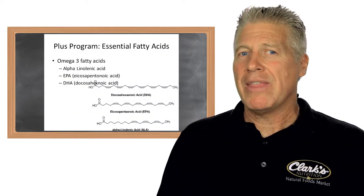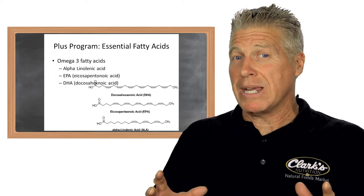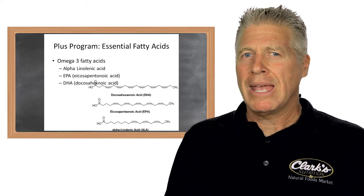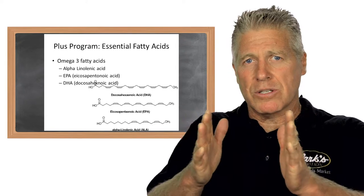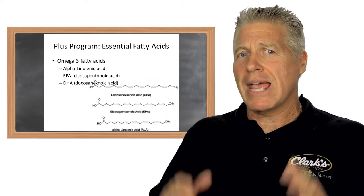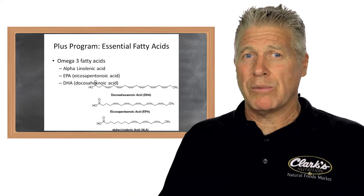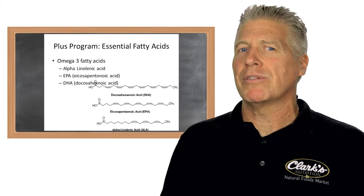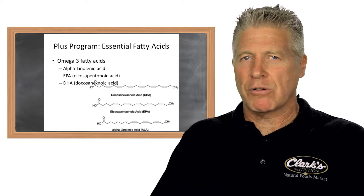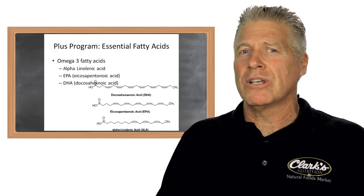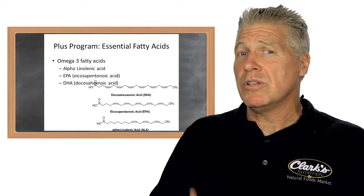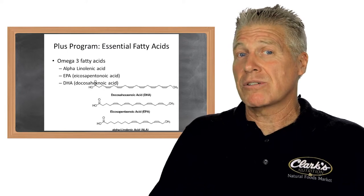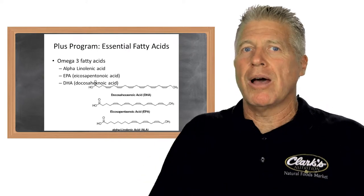Our next fat is omega-3 fatty acids, specifically linolenic acid. When we look at the structure, we see alpha-linolenic acid, or ALA, as well as EPA and DHA. ALA is a bit shorter than EPA and DHA, and the body actually takes ALA and builds EPA and DHA. Some of the heart-healthy benefits include reducing triglycerides in the blood and improving cholesterol — bringing down LDL, the bad cholesterol, and raising HDL, the good cholesterol.